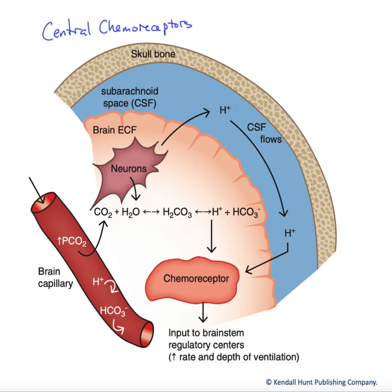Let's talk about the central chemoreceptors. Chemoreceptors in general are sensitive to blood and interstitial fluid chemistry, including oxygen levels, carbon dioxide levels, and free proton levels, or pH.